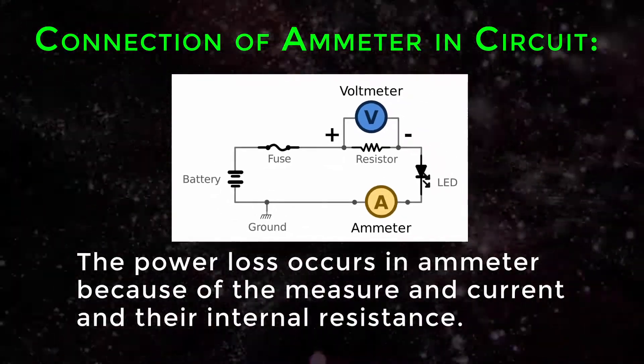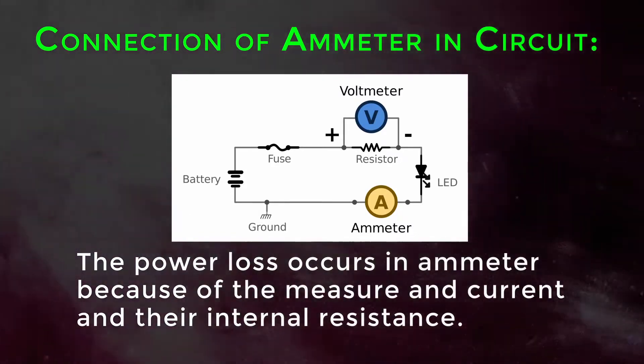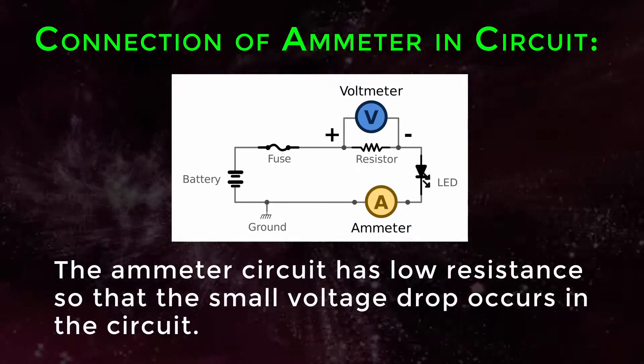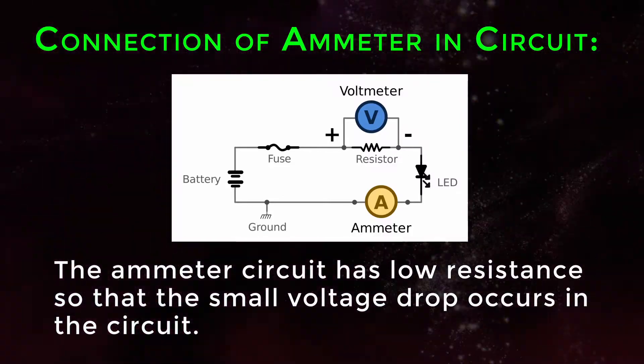The power loss occurs in ammeter because of the measured current and their internal resistance. The ammeter circuit has low resistance so that a small voltage drop occurs in the circuit.